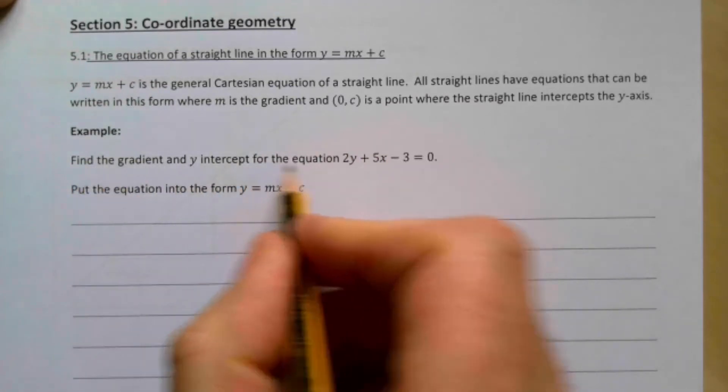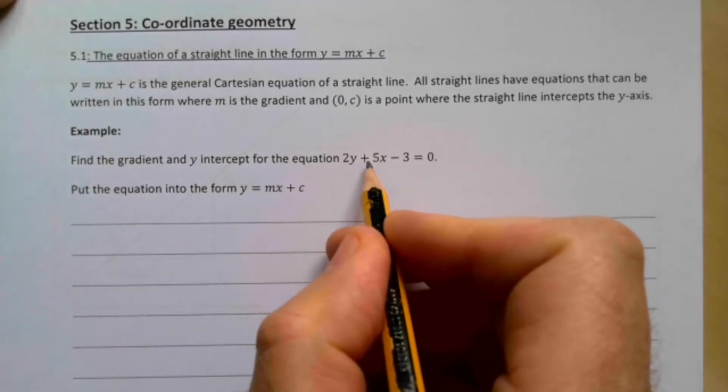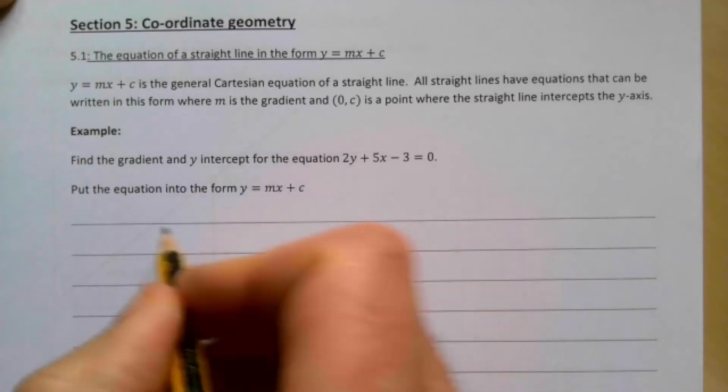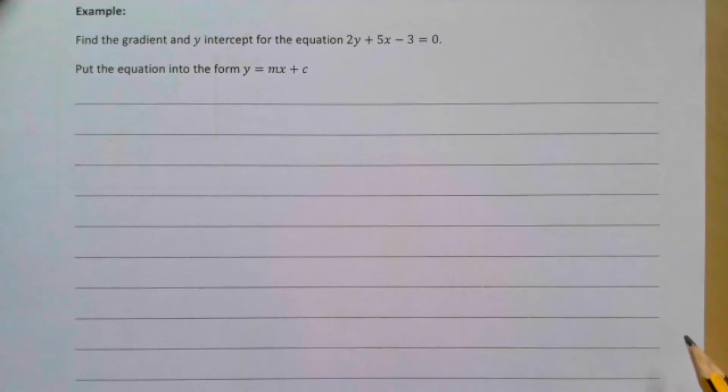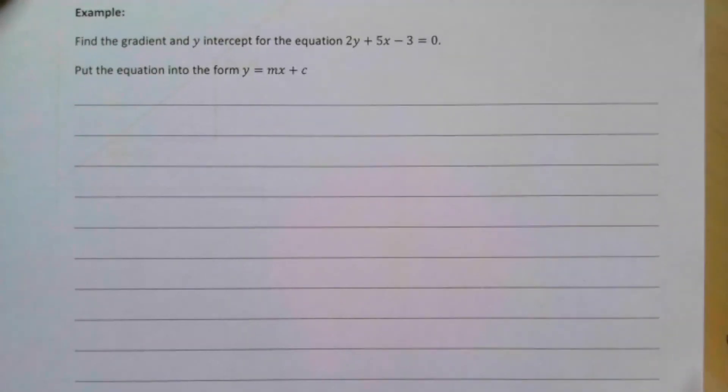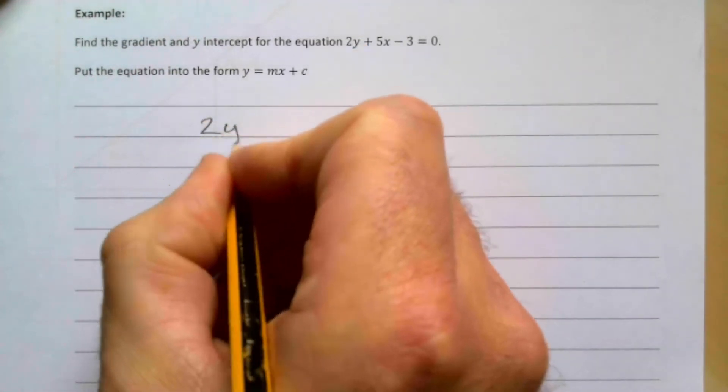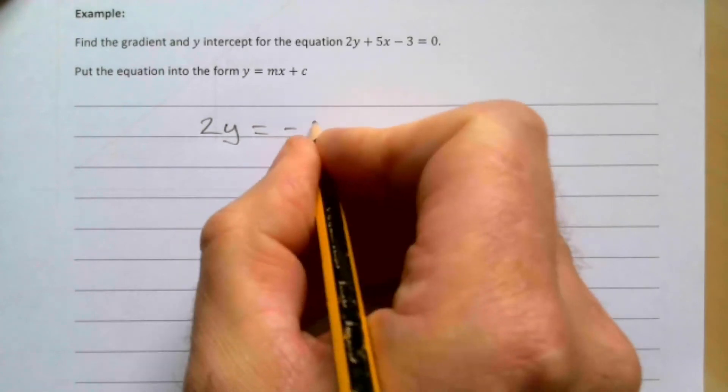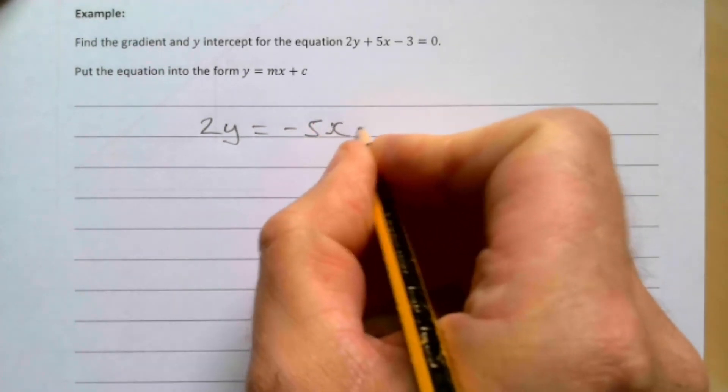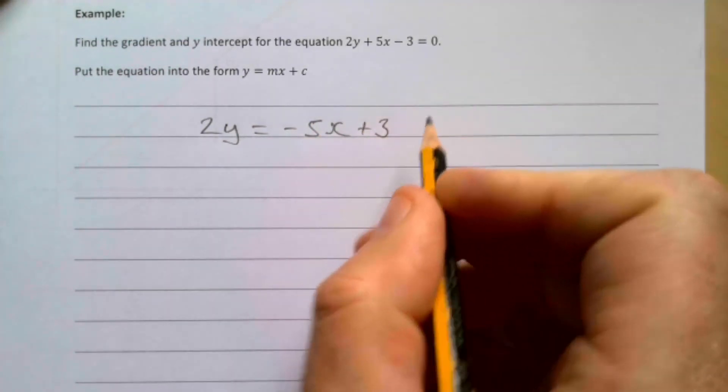Find the gradient and y-intercept for this equation: 2y + 5x - 3 = 0. Put the equation into the form y = mx + c. So first of all, I would want to rearrange it. I'm going to go 2y = -5x + 3. Hope you see what I've done there. I've taken these two things over to the other side.